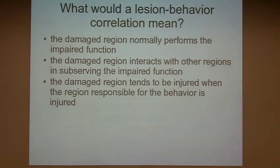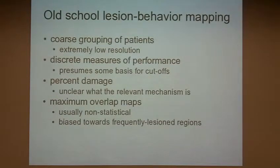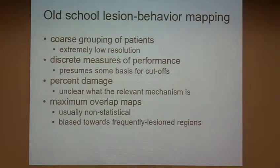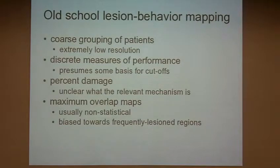There's a lot more — I have other slides about other issues with interpretation. There hasn't been that much change in lesion behavior mapping over the past 150 years, though at some point it became an experimental technique and not just Paul Broca writing up a single subject. I want to describe what I think of as old school lesion behavior mapping — the way it was done when I was in grad school — divided into four points. A lot of these are still very viable approaches.